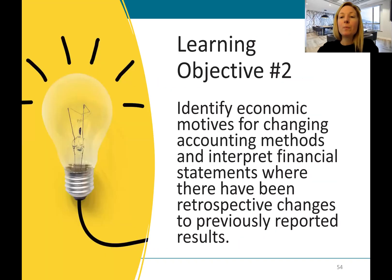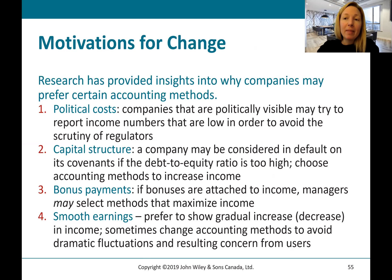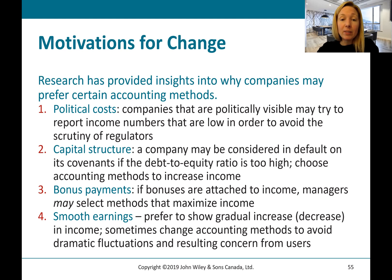Learning objective number two is to identify economic motives for changing accounting methods and interpret financial statements where there have been retrospective changes to previously reported results. Why do companies record these changes? Research has provided insight into why companies may prefer certain accounting methods. There are political reasons — perhaps trying to report higher or lower income. There are capital structure considerations, such as managing debt covenant ratios. If bonuses are attached to income, that could also be a driver. And companies may change methods to smooth earnings.